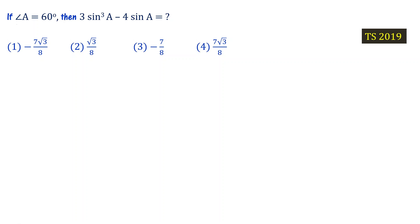If angle A equals 60 degrees, then what is the value of 3sin³A minus 4sinA? This is a Telangana State Policy exam question from 2019.